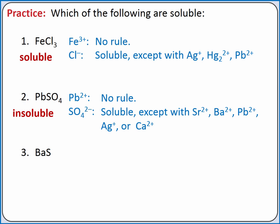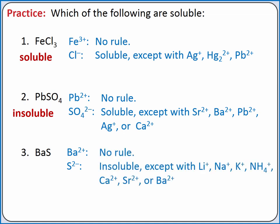Barium sulfide breaks apart into barium 2+ and sulfide ions. Barium does not have its own rule. Sulfide is normally insoluble except when paired with the cations that are always soluble, or when paired with calcium, strontium, or barium. So barium sulfide is soluble.